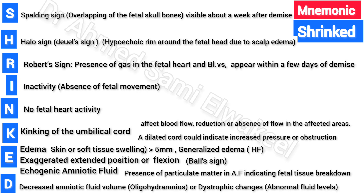D stands for decreased amniotic fluid volume, or oligohydramnios, which is another important indicator of IUFD. It could also be polyhydramnios, which may indicate dystrophic changes signaling abnormal fluid.